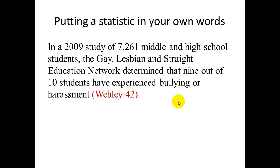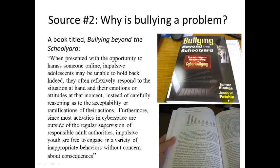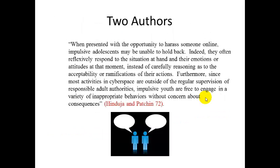Some sources have two authors. The book about bullying beyond the schoolyard actually has two authors: Samir Hinduja and Justin W. Patchen. This is really easy with two authors — it's the same as with a one-author source. I've got Hinduja and Patchen, 72 — no comma between Patchen and 72, just a space. The period goes on the outside of the in-text citation, and that's all there is to citing that source.